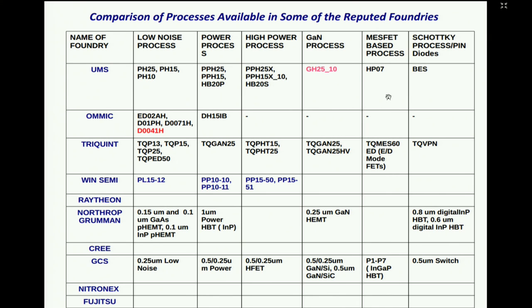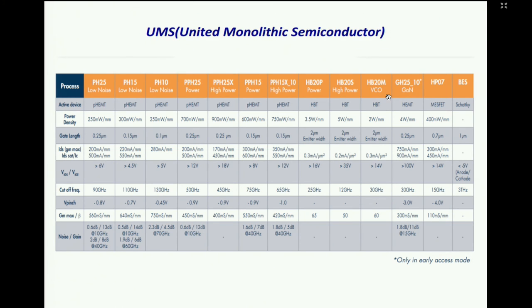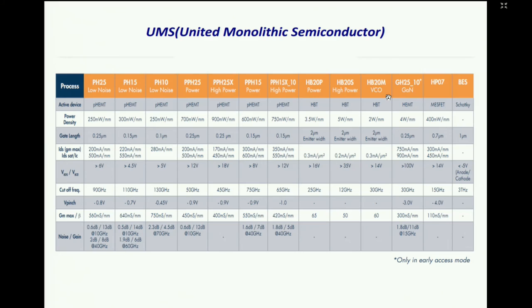From UMS, the PH25 process has a 250 nanometer gate length and the PH15 has a 150 nanometer gate length, with cutoff frequencies of 90 GHz and 110 GHz respectively. The definition of FT is the frequency at which the current gain of your device is one, and FMax is the frequency at which the maximum available gain of your device is one. Generally FMax is greater than FT, but you normally operate below FT.